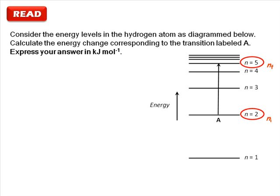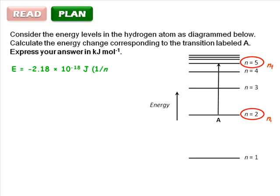Next, plan. We can use the equation E equals negative 2.18 times 10 to the negative 18 joules times 1 over n final squared minus 1 over n initial squared to find the change in energy. Then the only thing left is to remember that you are asked to express your answer in kilojoules per mole, so you'll need to convert from joules to kilojoules and from molecules to moles using Avogadro's number.